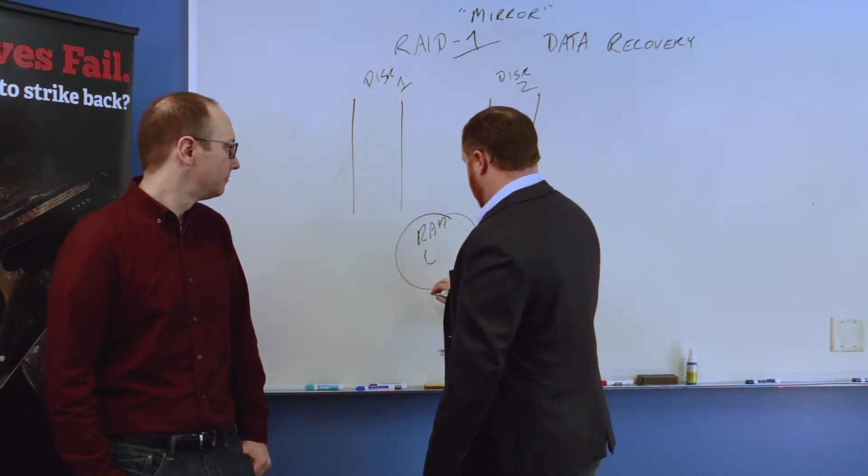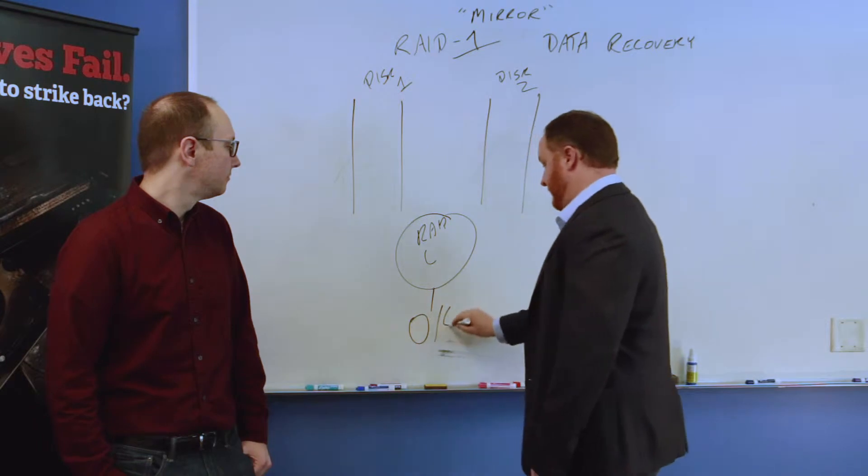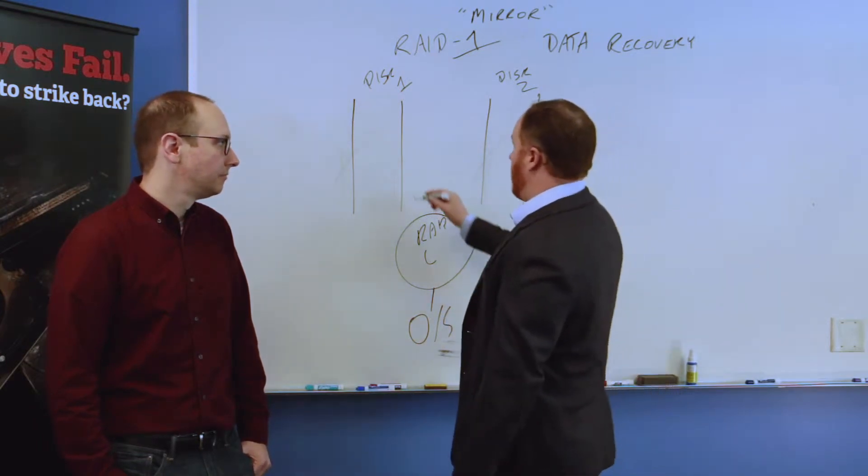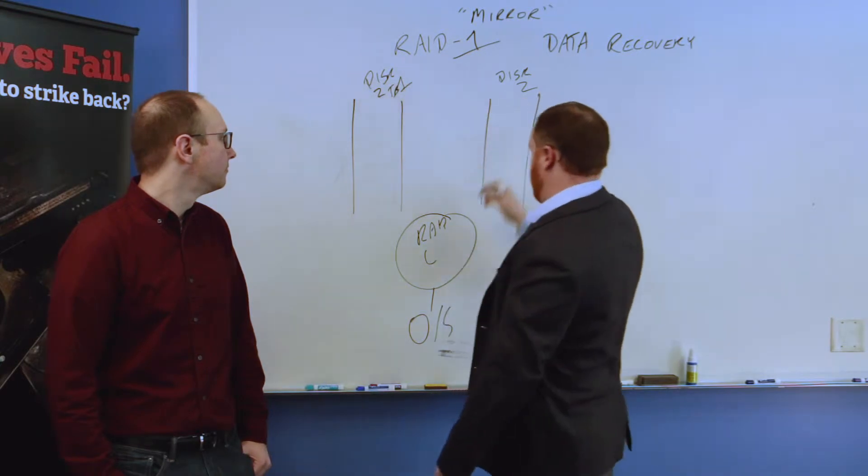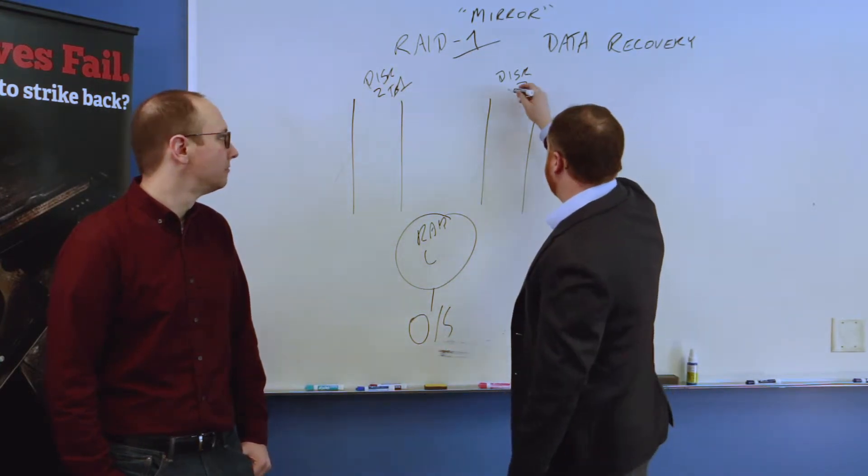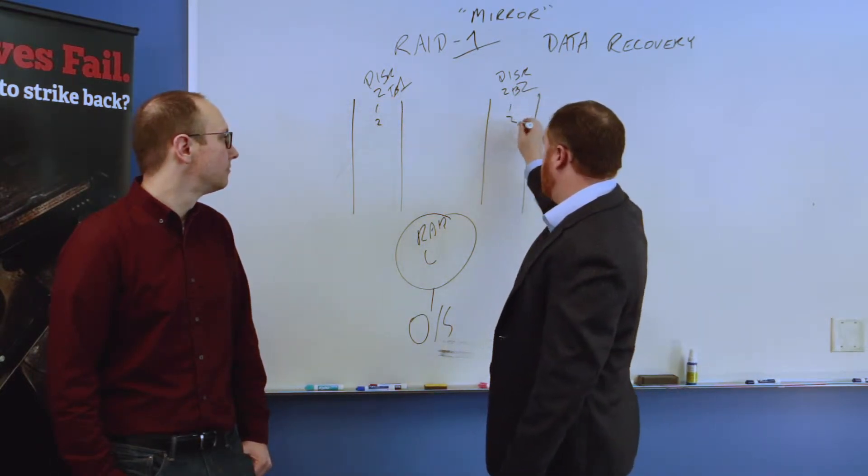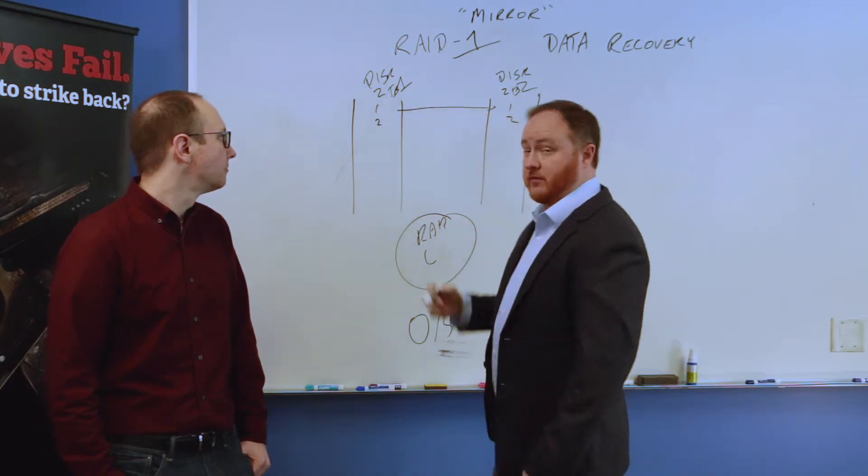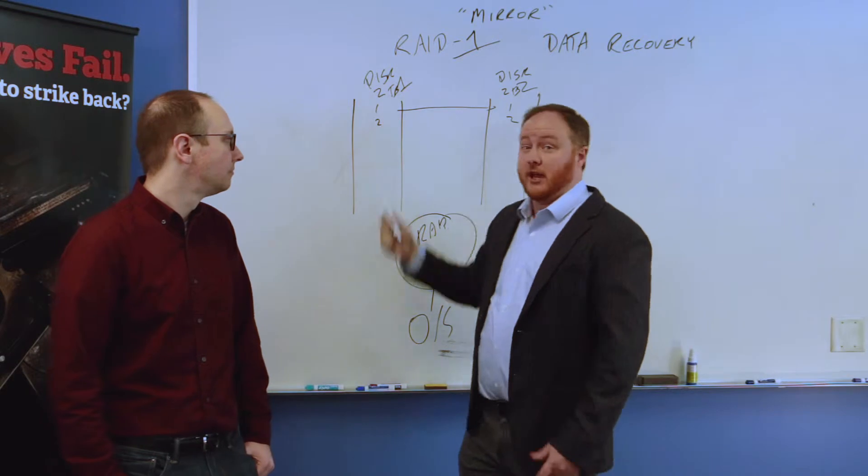It's in between these disks and the operating system, and its job is to take these two two-terabyte disks and represent them as one two-terabyte volume to the operating system. And every block over here is going to have a redundant block here. So every time you write data to position one it's going to be mimicked over here and here.